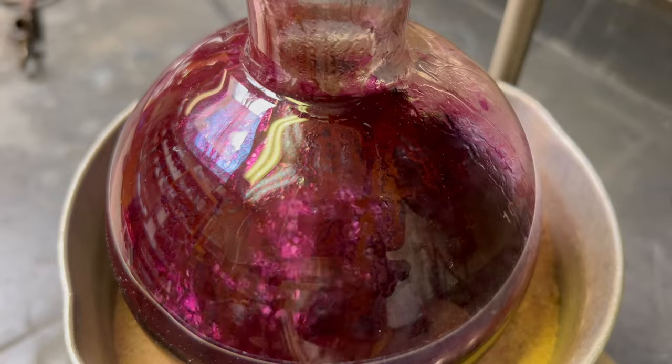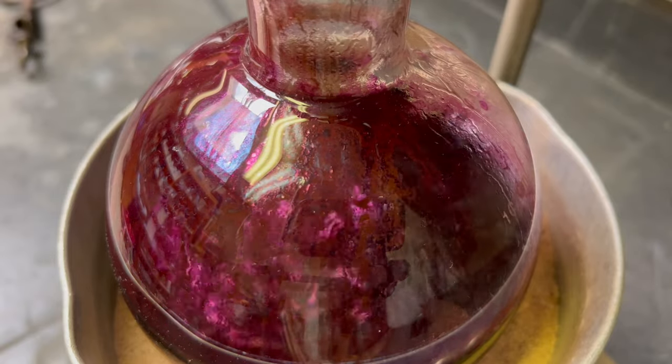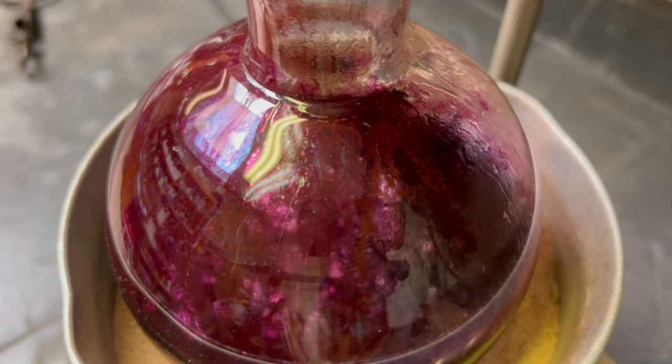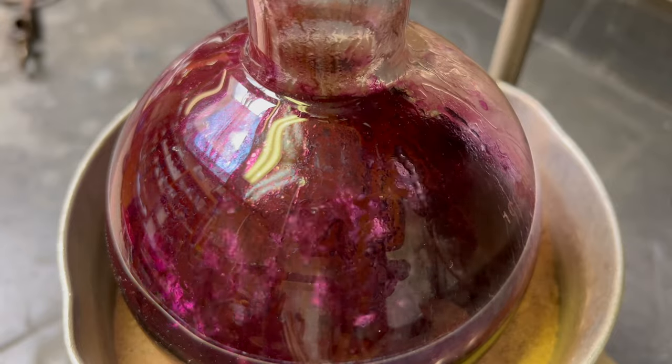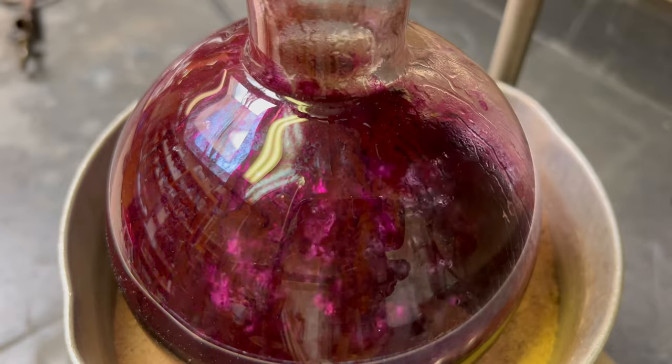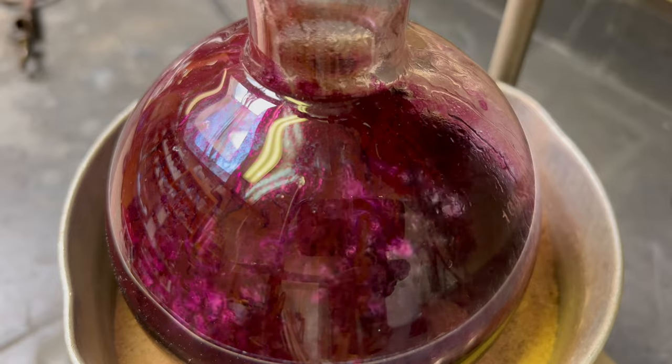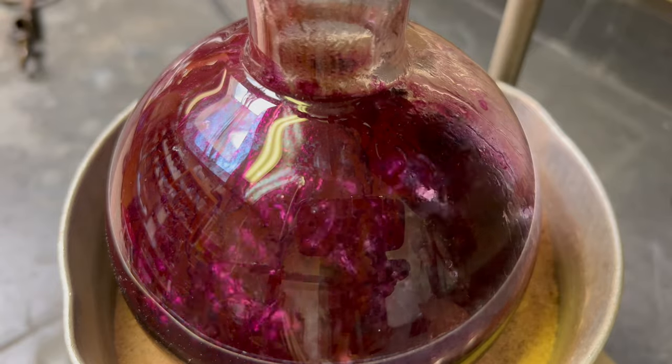Chemists also use polariscopes in their work. They use them to study the structures of molecules as well as to determine purity of a sample. When a sample is placed between polarizing filters, the direction of polarization will change depending on the structure of the sample. By analyzing the patterns seen through the polarized filters, chemists can determine the purity of a sample and gain insight into the structure of the molecule.